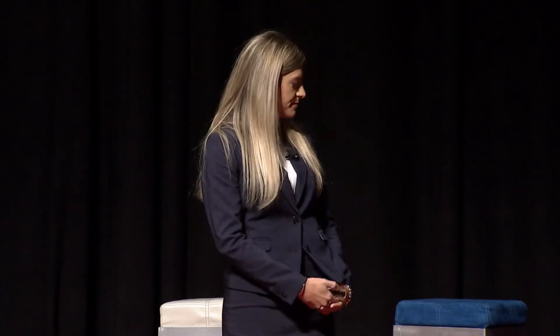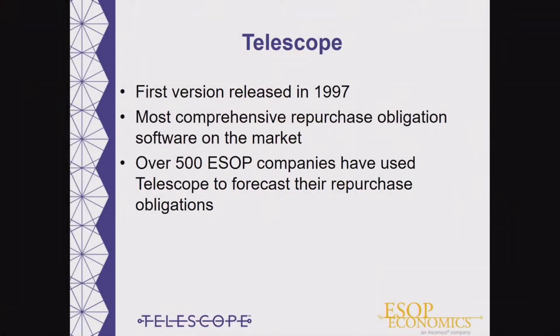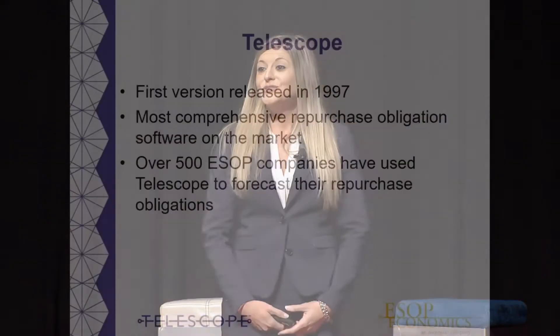We can also help you analyze benefit levels and understand the sufficiency of your current funding strategy. Telescope was first released in 1997, and we have continuously updated the software throughout the years. It is the most comprehensive repurchase obligation software on the market, and over 500 ESOP companies have used Telescope to forecast their repurchase obligations. With that, let's take a look at the Telescope software itself.